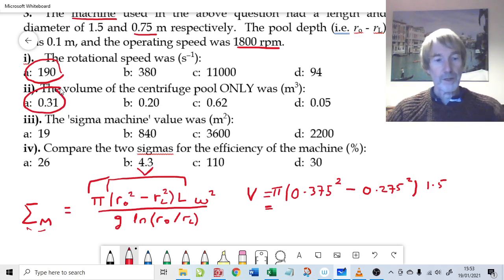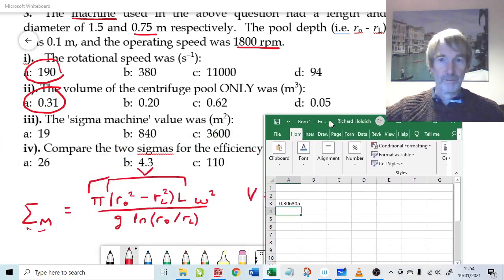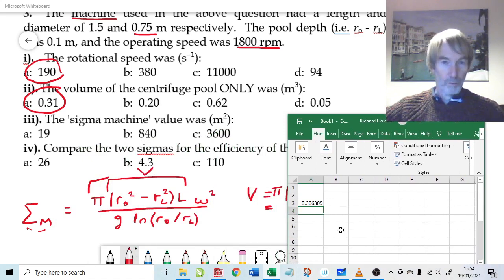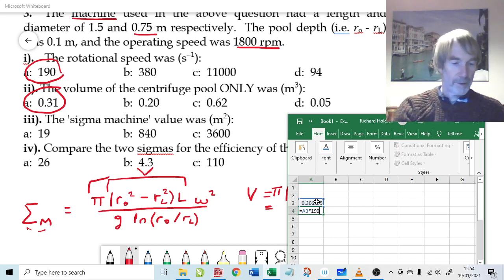Good, so the sigma value for the machine. I'll bring the spreadsheet over to the other side. The sigma value for the machine then, because we need to multiply the volume of the machine which we just calculated there, times by the rotational speed squared which is 190 squared. Then we need to divide by g. Strange to see g in a centrifuge equation, but it's arrived in the derivation.